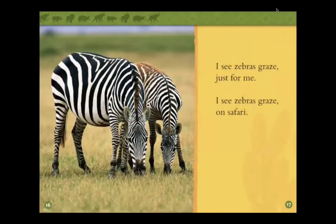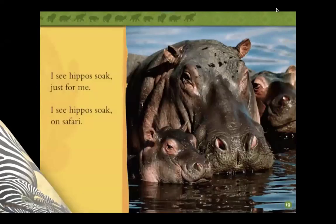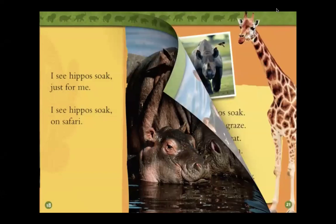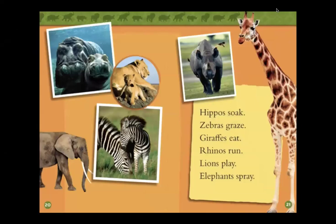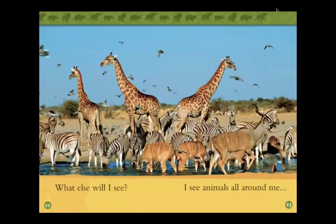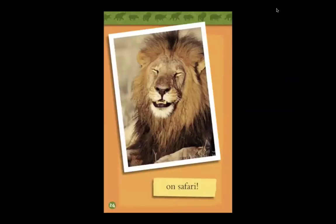I see zebras graze just for me, I see zebras graze on safari. I see hippos soak just for me, I see hippos soak on safari. Hippos soak, zebras graze, giraffes eat, rhinos run, lions play, elephants spray — what else will I see? I see animals all around me on safari.